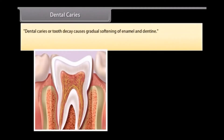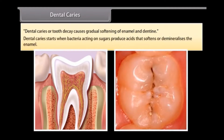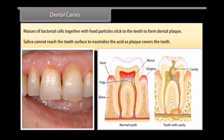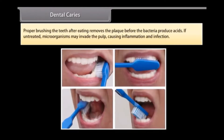Dental caries, or tooth decay, causes gradual softening of enamel and dentine. It starts when bacteria acting on sugars produce acids that soften and demineralize the enamel. Masses of bacterial cells together with food particles stick to the teeth to form dental plaque. Saliva cannot reach the tooth surface to neutralize the acid as plaque covers the teeth. Proper brushing after eating removes plaque before bacteria produce acids. If untreated, microorganisms may invade the pulp, causing inflammation and infection.